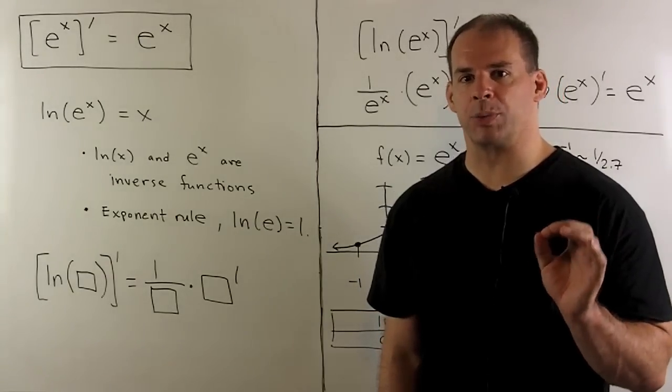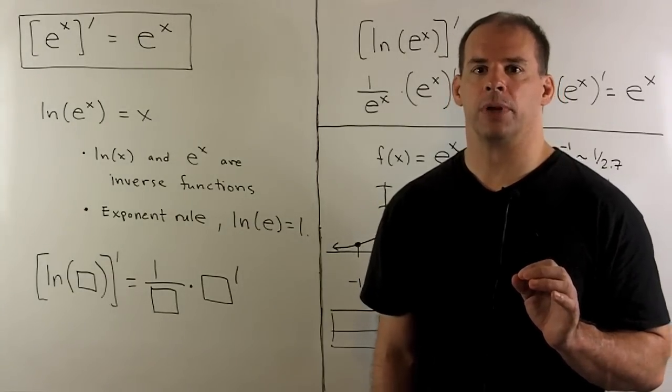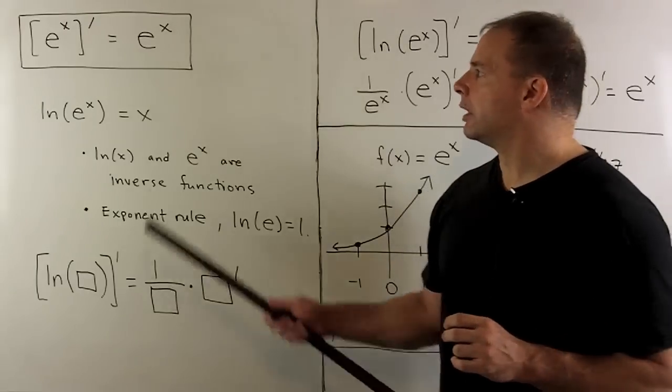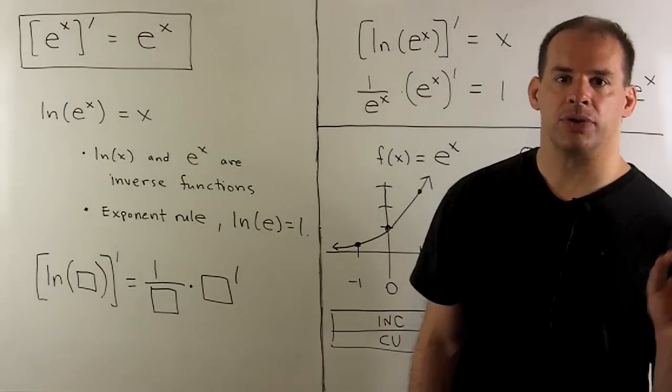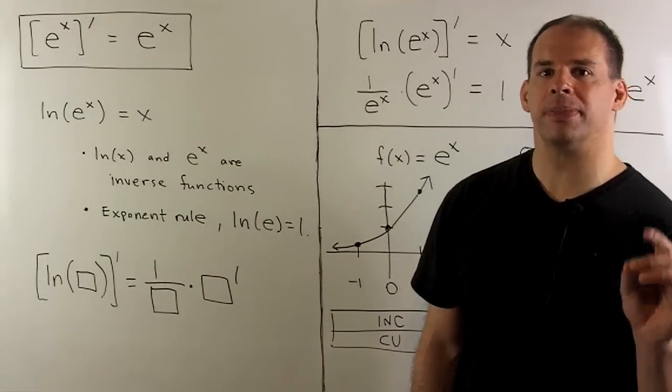Let's look at derivative properties of the exponential function. Our main result is the derivative of e to the x is e to the x itself. So if I take the derivative of the exponential function, I do nothing.